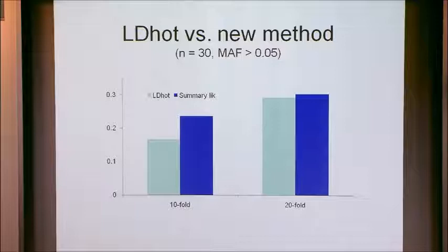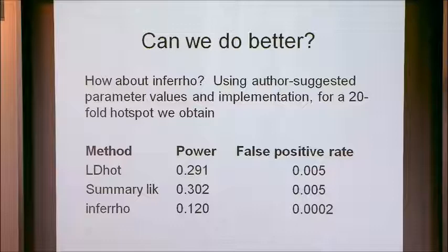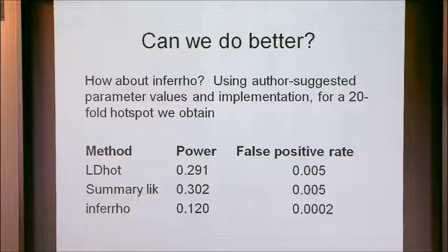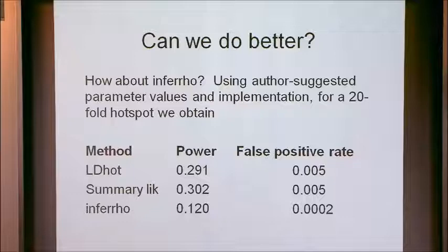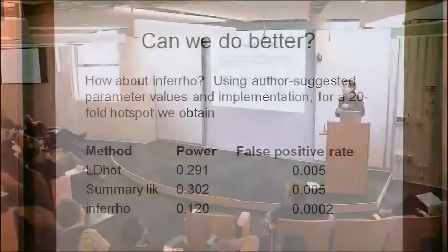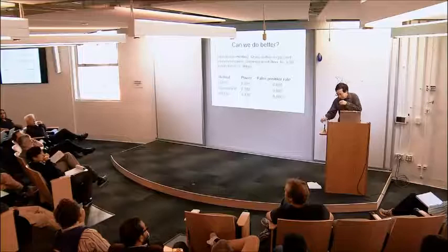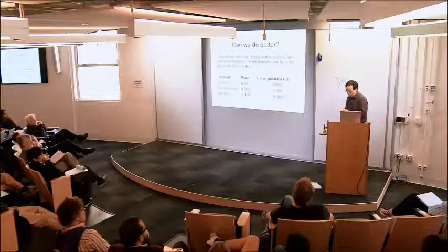We also looked at infer rho, which is the closest thing to an implementation incorporating the full likelihood. The available implementation has low power and extremely low false positive rate — if it calls a hotspot, you're pretty sure it's a hotspot, but it's not going to call very many of them. There's a chance if you tinker with the code you might get some improvement — the power is a function of some arbitrary parameter influencing both false positive rate and power, and if tinkered so it had the same false positive rate, it may have higher power. But to infer recombination rates and hotspots across a whole genome would still take 1500 years.